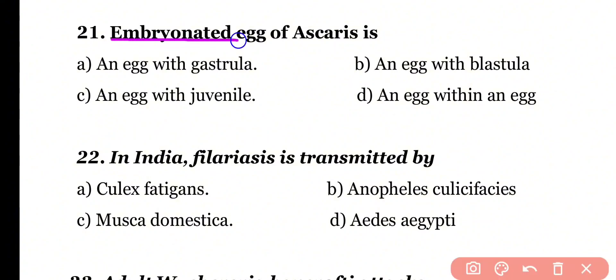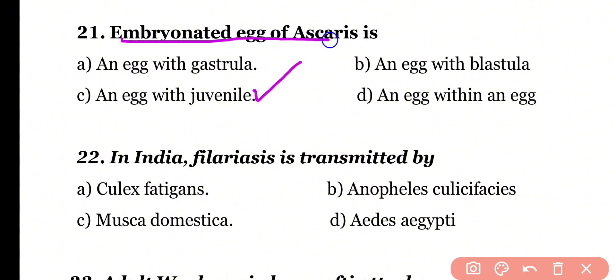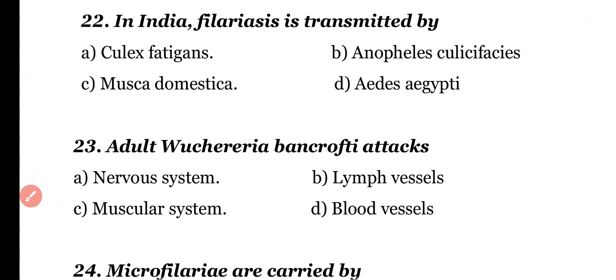Question 21: Embryonated eggs of Ascaris is an egg with gastrula, an egg with blastula, an egg with juvenile, or an egg within an egg. Correct answer is option C. The embryonated egg of Ascaris is a second-stage larva which consists of an egg with a juvenile stage.